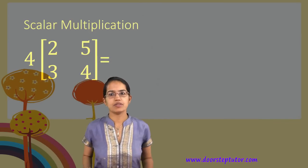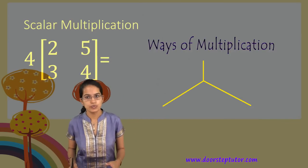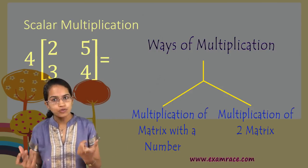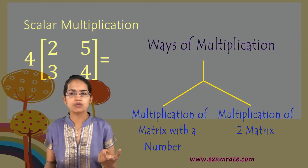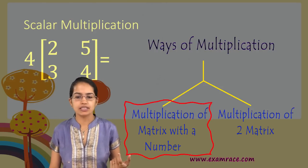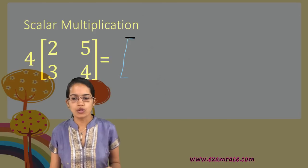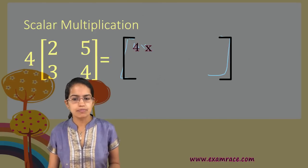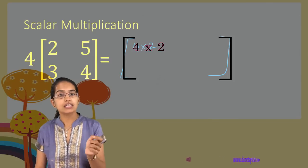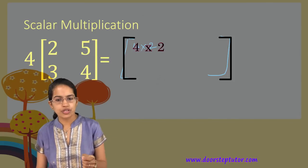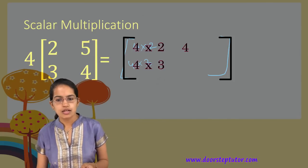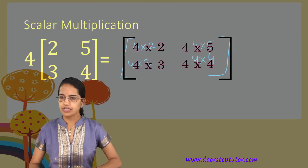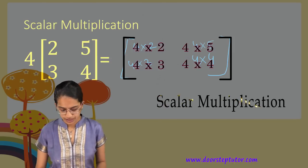Multiplication can be understood in two ways: multiplication of a matrix with a number, or multiplication of two matrices. The first case — multiplication of a matrix with a number — is pretty simple. You take the number and multiply it with each element of the matrix. So 4 would be multiplied with each element: 4×2, 4×3, 4×5, and 4×4. This is scalar multiplication.